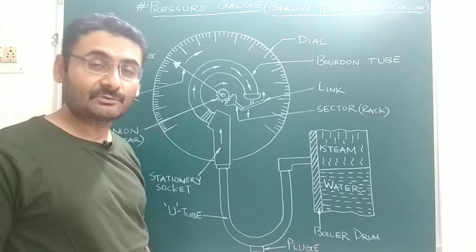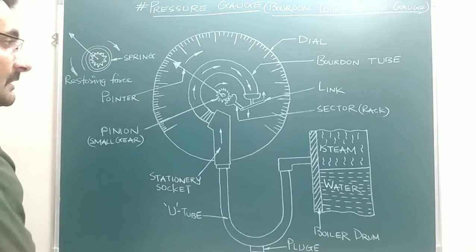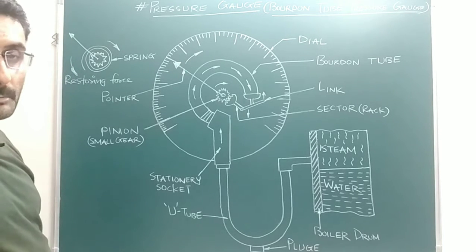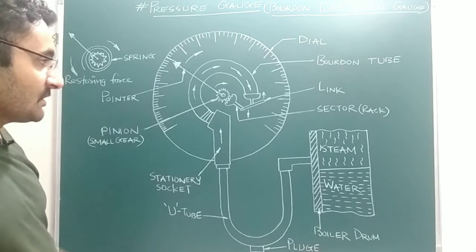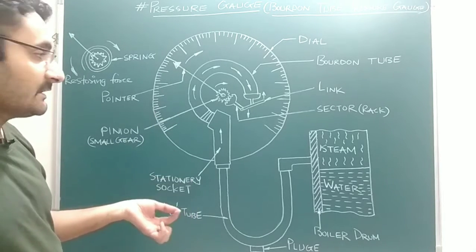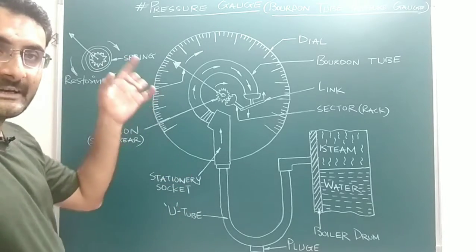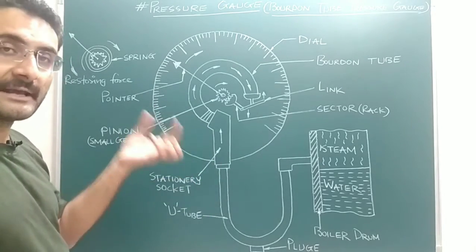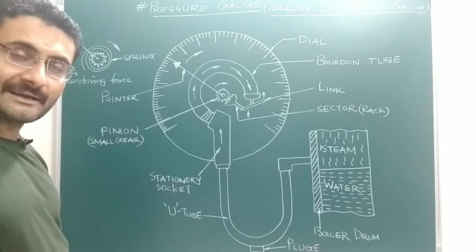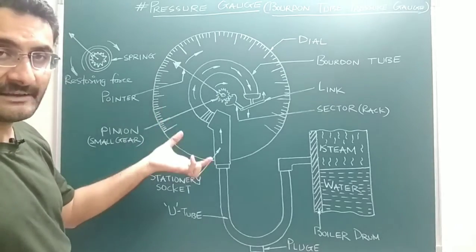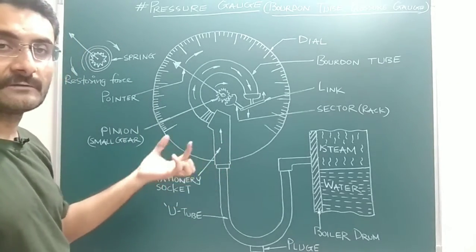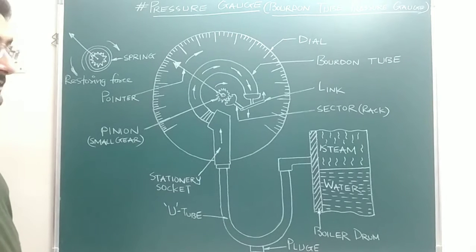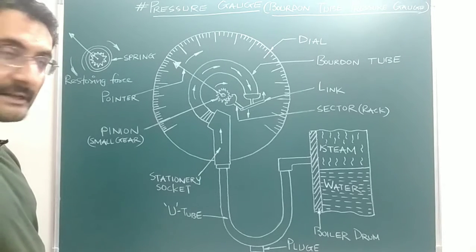I hope you are ready with your pen and paper to note down important points. If a question is asked in your examination — write down the working principle of the pressure gauge or Bourdon tube pressure gauge — you will first draw the figure. The first sentence would be: pressure gauge is a mounting located on the body or shell of the boiler, used to measure the pressure of the steam present inside the boiler.